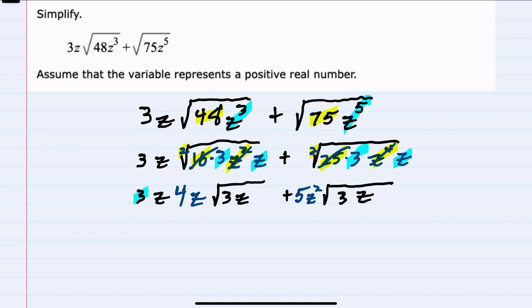Next, I see that I have some like elements that I can combine on the left-hand side. 3 times 4, I can multiply those to be 12. Z times z, I can multiply to be z², bringing down the radical.